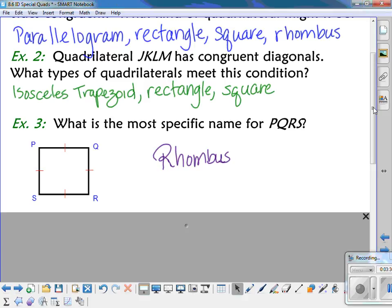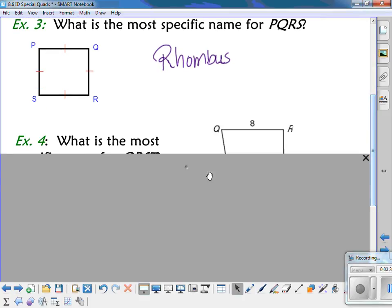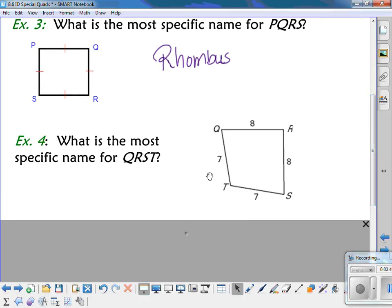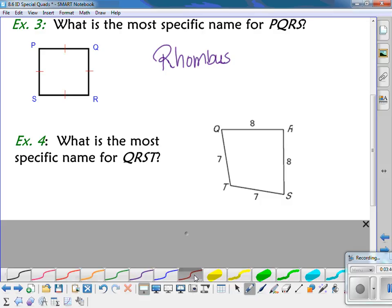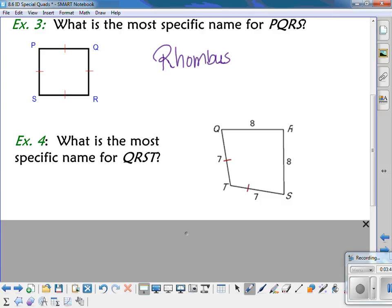All right, looking at the next example. Now I've got QRST. I noticed that I've got two sets of congruent sides. QT is congruent to ST, and QR is congruent to SR. And the sides are not opposite each other. They're adjacent, so that means it has to be a kite.